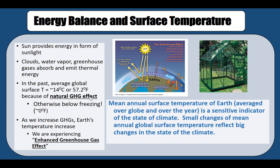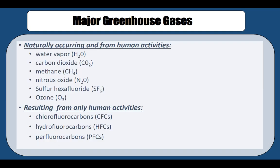Other human activities include deforestation. Here are some greenhouse gases: water vapor, carbon dioxide, methane, nitrous oxide, sulfur hexafluoride, and ozone — all of these occur naturally as well as from human activity. On the other hand, CFCs (chlorofluorocarbons), HFCs (hydrofluorocarbons), and PFCs (perfluorocarbons) are only coming from human activity, typically from industrial production, heating and cooling activity, and other industrial-scale activities.